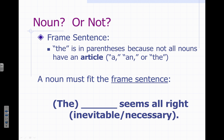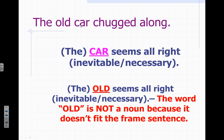One good way to test yourself: if you're ever uncertain, a framed sentence is a good way to determine whether or not something is indeed a noun. You plug in the word, and if it fits the sample sentence, you can tell it's a noun. For example, looking at the sentence 'The old car chugged along,' I can test car by plugging it into my framed sentence: 'The car seems alright.' That makes sense, so car is a noun. But if I plug in old — 'The old seems alright' — that doesn't make sense, because old is an adjective, not a noun.